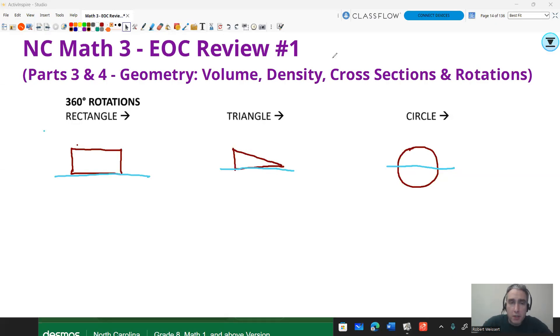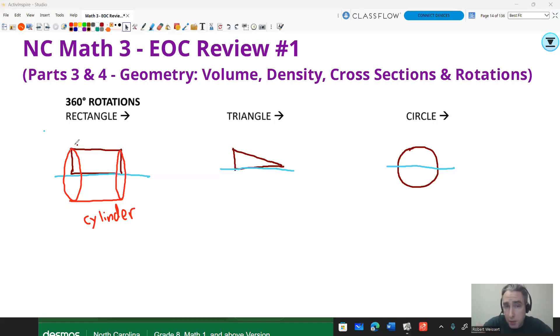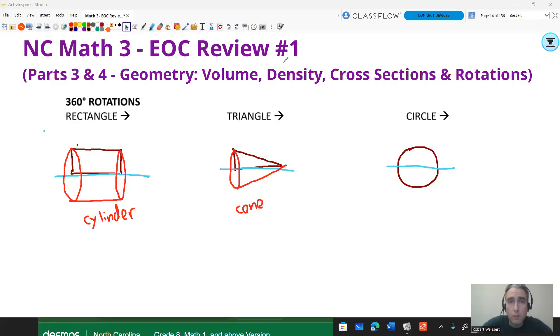Now, when you spin things around 360 degrees, you can take two-dimensional shapes and form three-dimensional objects as well. They're all going to have circular bases as a result. A rectangle could turn into a cylinder. A triangle could turn into a cone. And a circle could turn into a sphere. All are going to have a radius centered around whatever that rotation was. Let's do a couple questions relating to that.